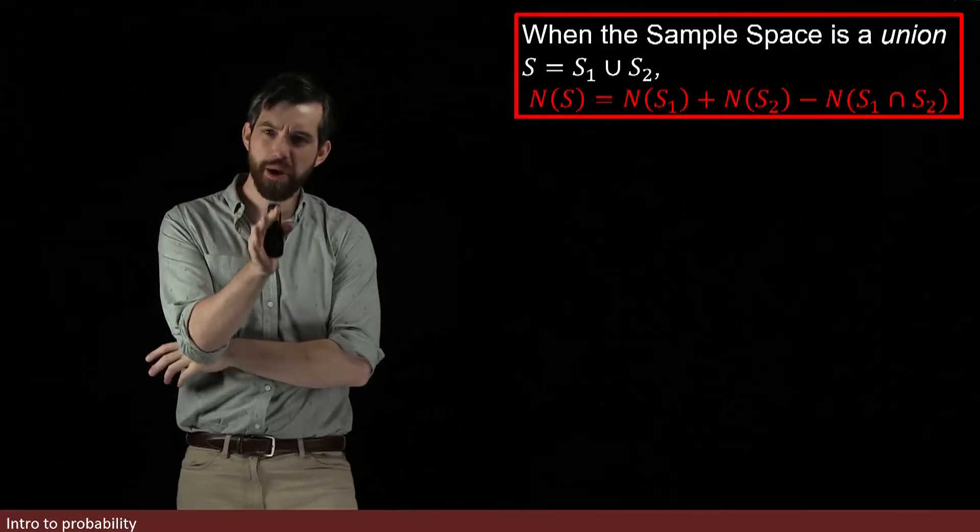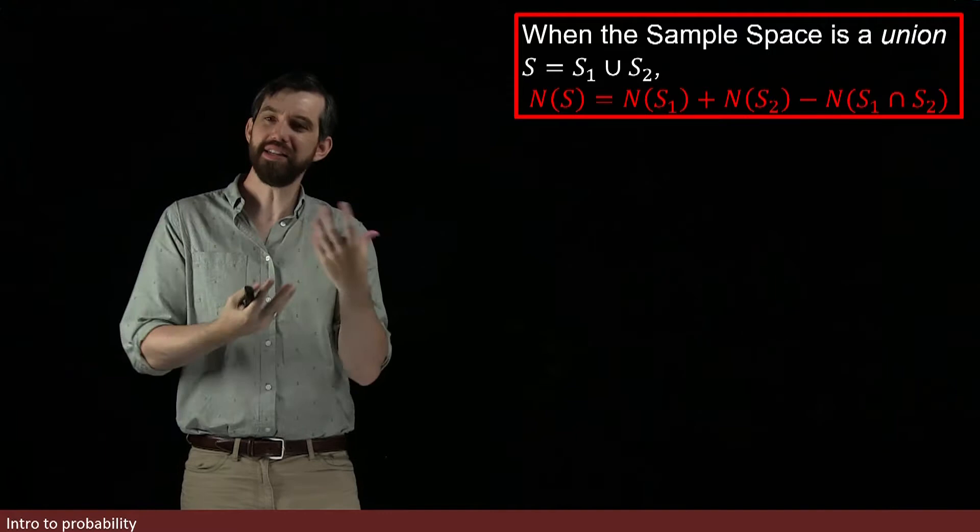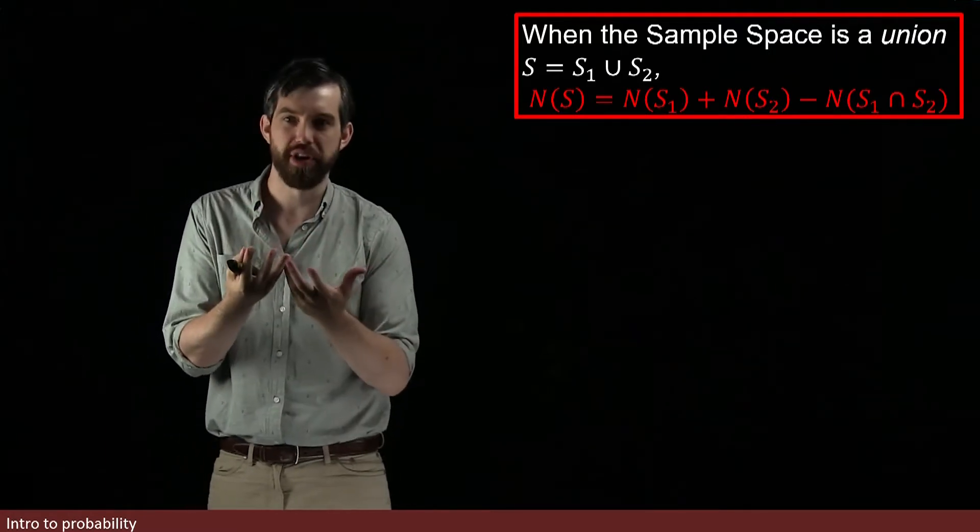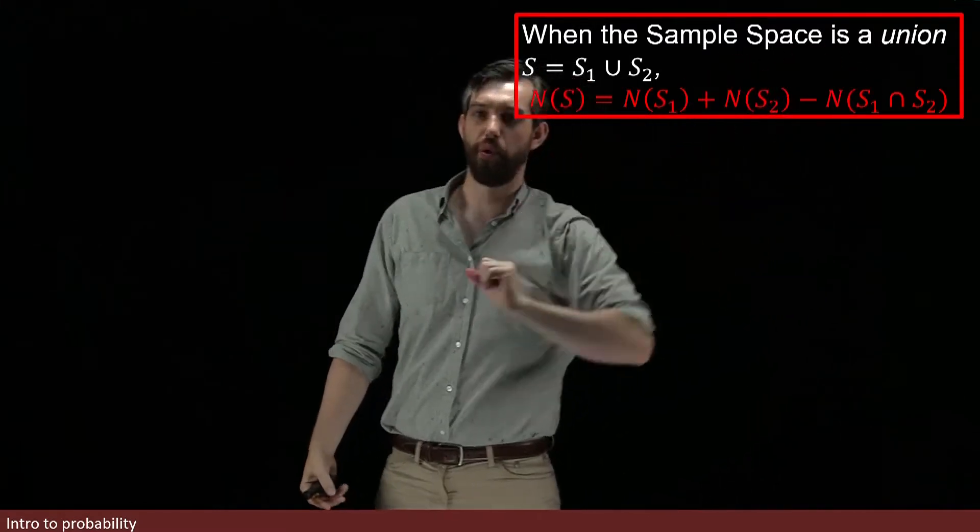What happens if my sample space is again separated into two different sets, but now it's not a disjoint union? Notice there's no word disjoint here, it's a normal old union.